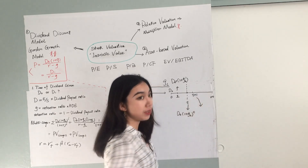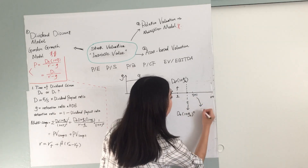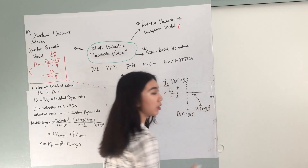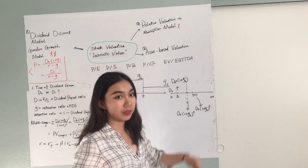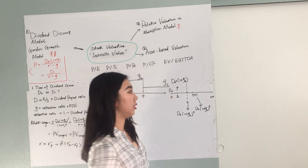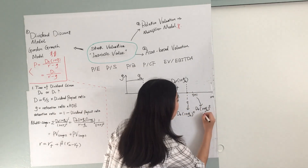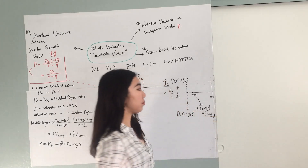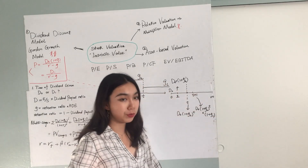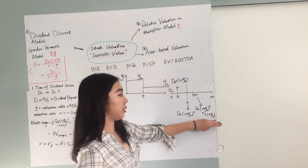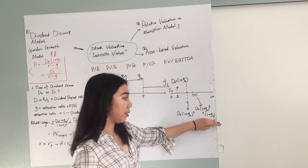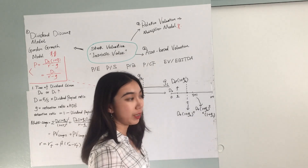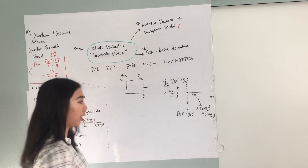At time T, the dividend is D0 times (1 plus GH) to the T-th power. For T plus 1, we multiply by (1 plus GL). For T plus 2, we take that value and again multiply by (1 plus GL). So the dividends after time T grow at the lower sustainable rate GL.